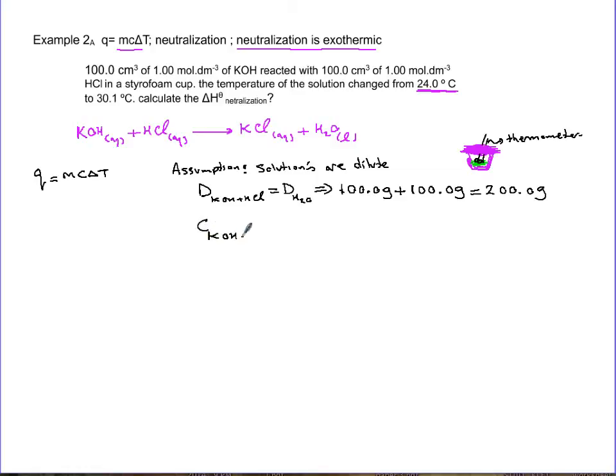The second assumption is heat capacity of this solution—we're going to say it's the same as heat capacity of water because it's dilute—and it's 4.18 joules per gram per degree Kelvin. Let's plug it in.